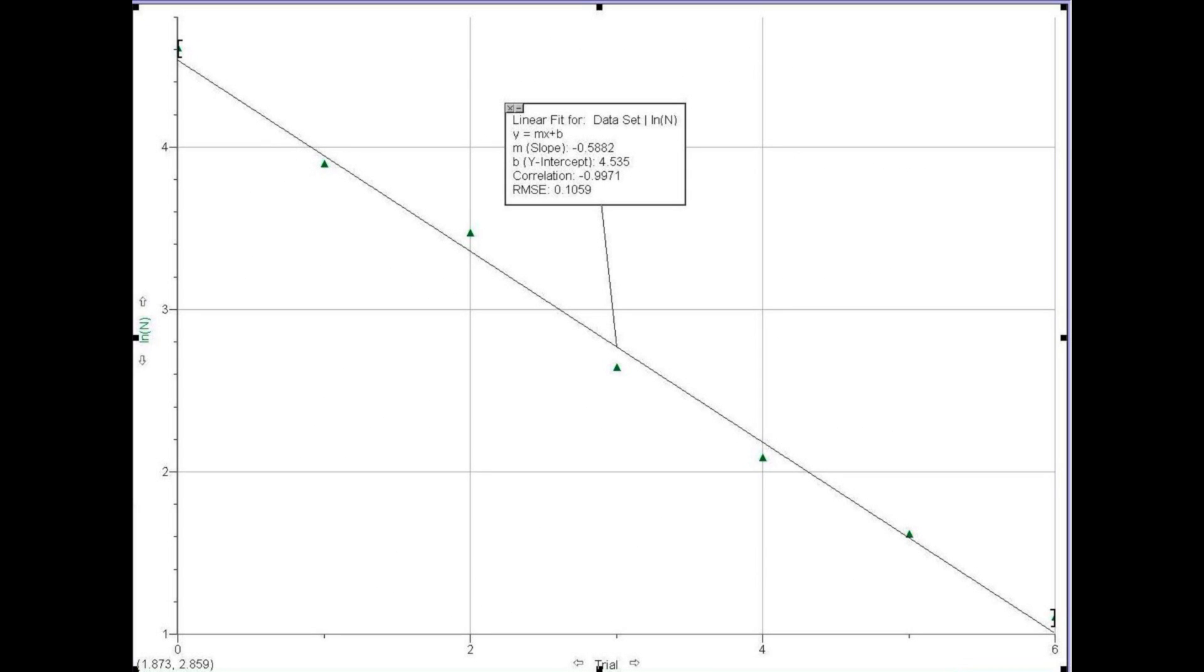Finally, plot the natural log of the numbers of coins versus trial number. The slope of the straight line should be lambda, that is, the log of 2.